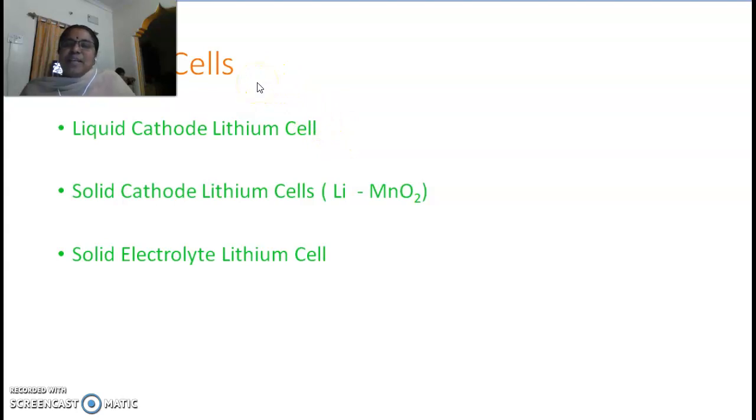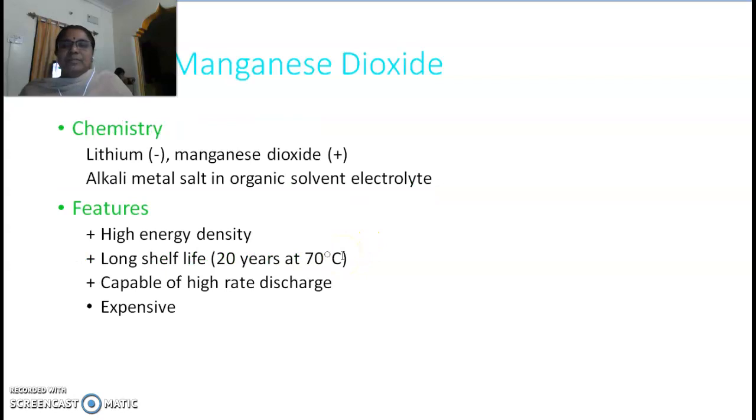The various other types mainly include lithium cells: liquid cathode lithium cell, solid cathode lithium cell. As I just explained, lithium manganese zinc—lithium is also there in lithium manganese dioxide and solid electrolyte lithium cell. The first case is lithium manganese dioxide.